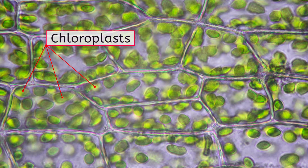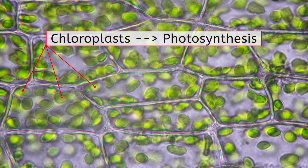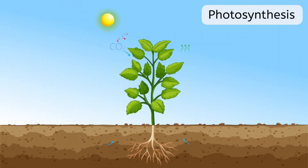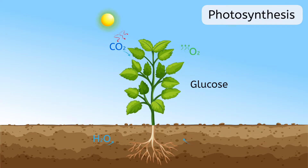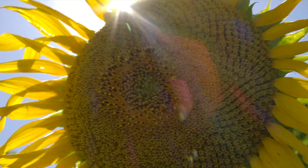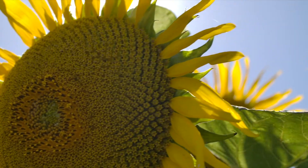The chloroplast is an organelle only found in plant cells and in some protists. This organelle is special because it has a superpower — it can do photosynthesis! This is where the magic happens. Carbon dioxide and water are turned into glucose and oxygen, with a little help from the sun. It's actually not magic at all, and you'll study the exact chemical reactions that make it possible in the next unit. But when you're hungry, the thought of being able to make your own food from sunlight does seem pretty magical.